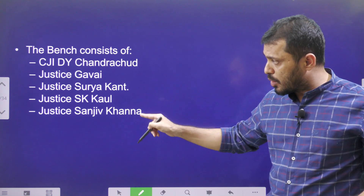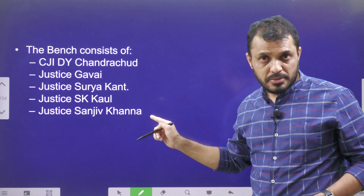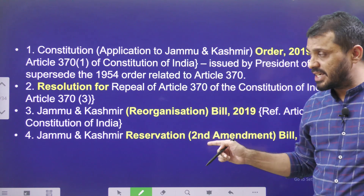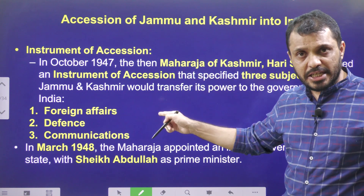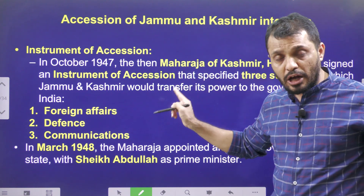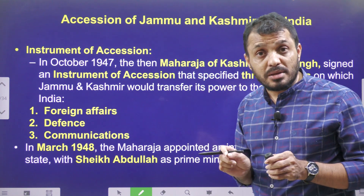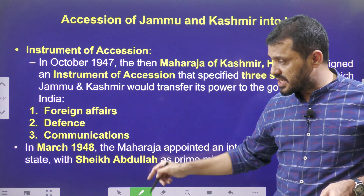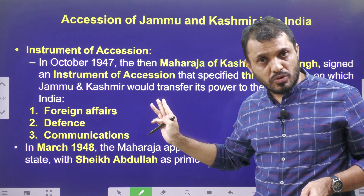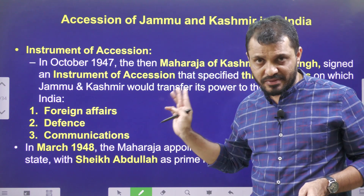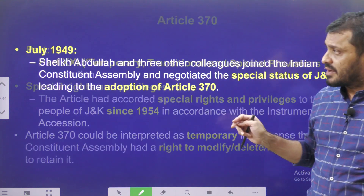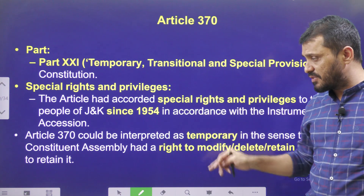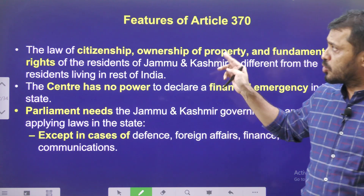The five judges in the bench were CJI D.Y. Chandrachud, Justice Gavai, Justice Surya Kant, Justice S.K. Koul, and Justice Sanjeev Khanna. When Jammu & Kashmir integrated with India in 1947 through the Instrument of Accession, J&K retained independence in all matters except three: foreign affairs, defense, and communication. Later, the 1952 Delhi Agreement led to Article 35A being inserted into the J&K Constitution in 1954.